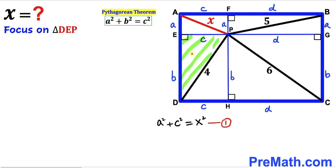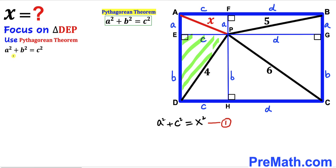Now we focus on right triangle DEP and apply the Pythagorean theorem. Here the hypotenuse is 4 and the two legs are b and c. Filling in the formula gives b² + c² = 4², which simplifies to b² + c² = 16. I will label this as Equation 2.